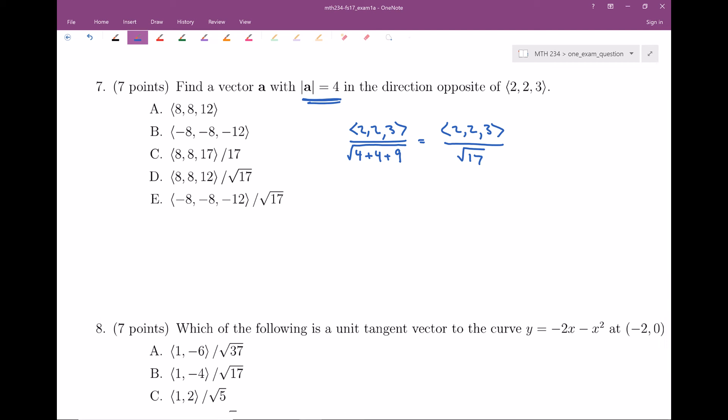and multiply it by 4. I'm going to scale it by 4, so I make this (4/√17) times <2, 2, 3>.